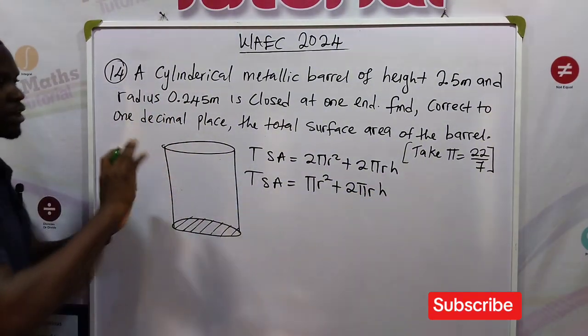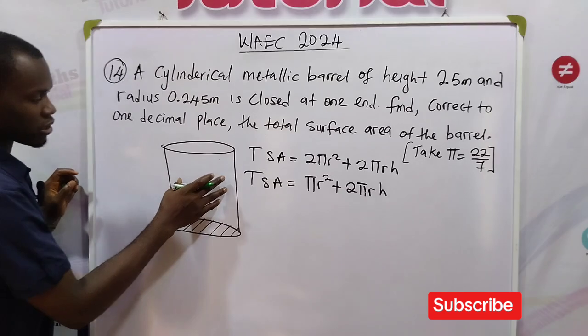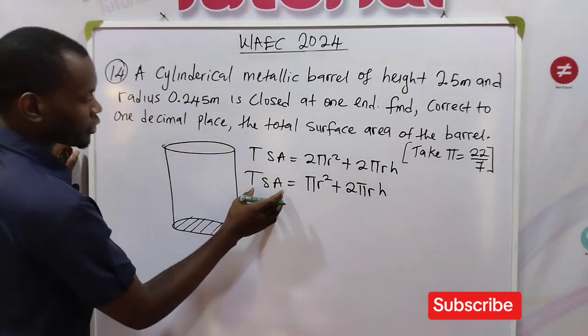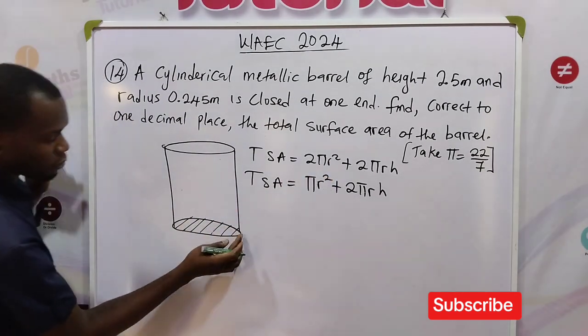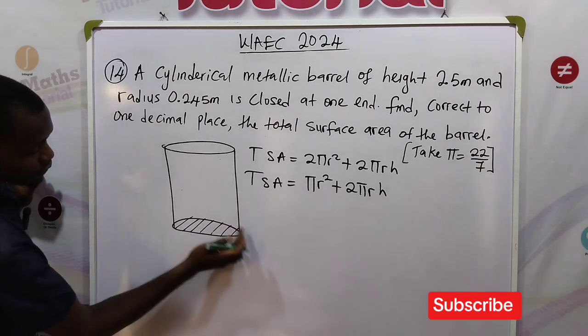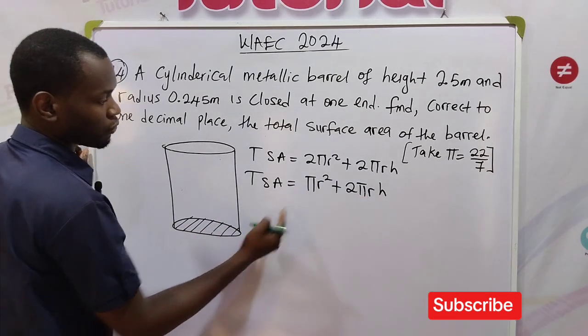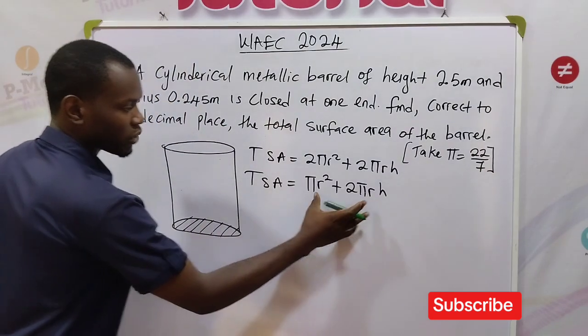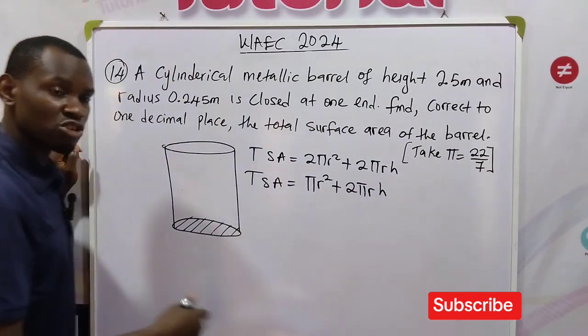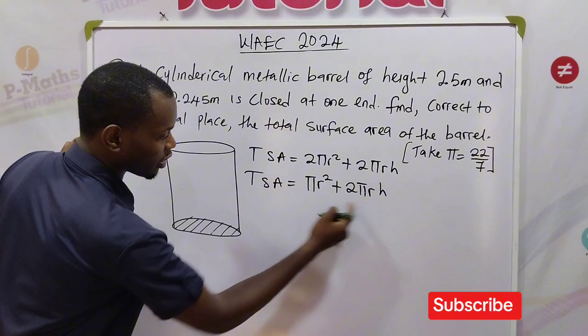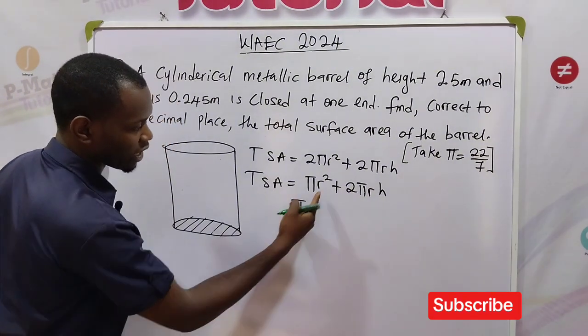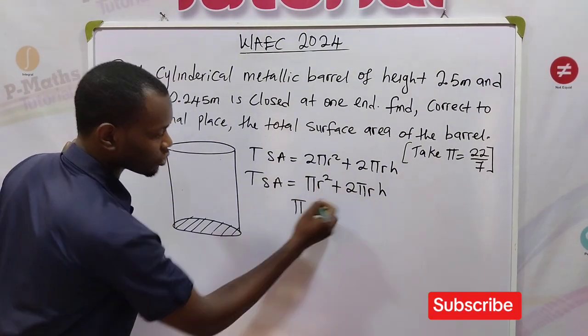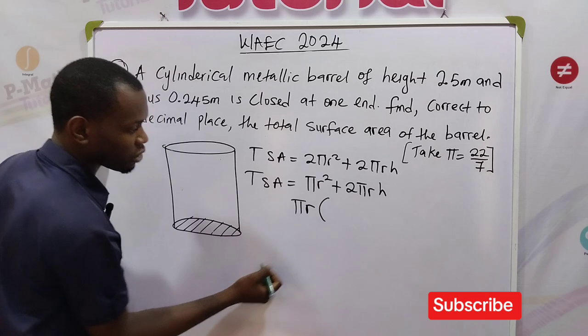2πrh is the lateral surface area, the body of the cylindrical shape, and πr² is the area formula for the area of a circle. Now π is 22/7, but we can factorize to make for easy solution. Bring π outside, bring r outside, then open a bracket: r + 2h.